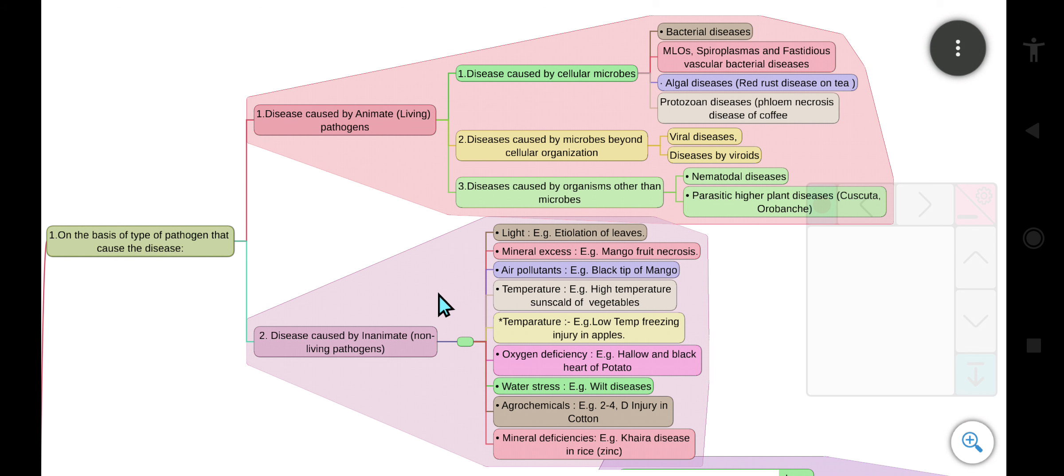And the second one is caused by inanimate or non-living pathogens. In this, light is one example, which causes etiolation or yellowing of leaves. And second is mineral excess. Its example is mango fruit necrosis.